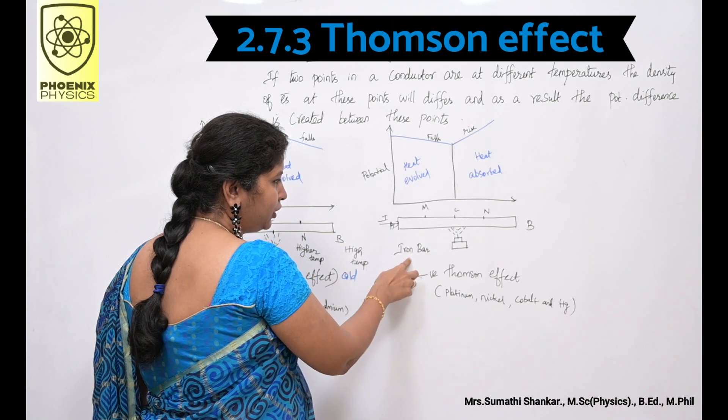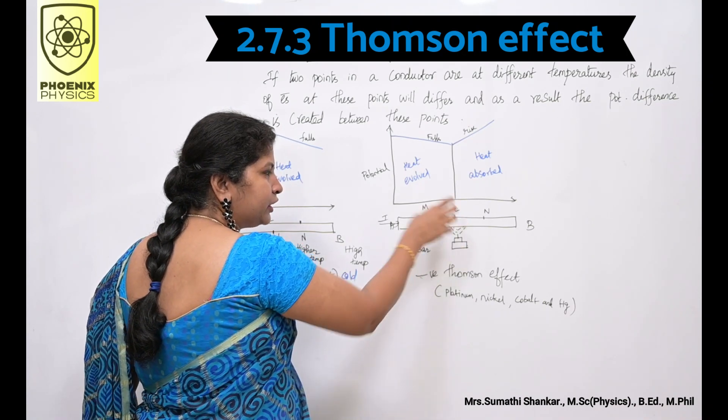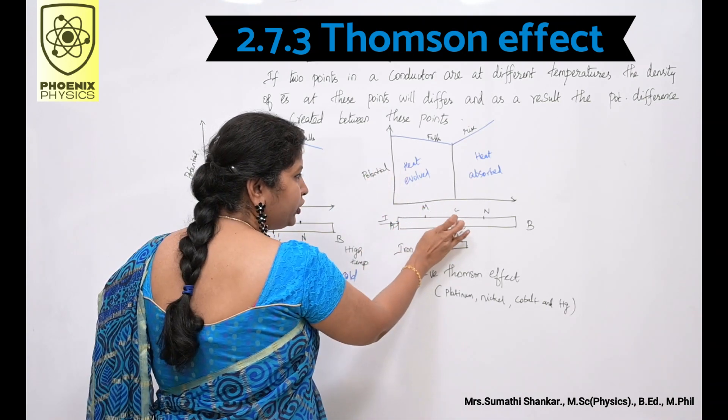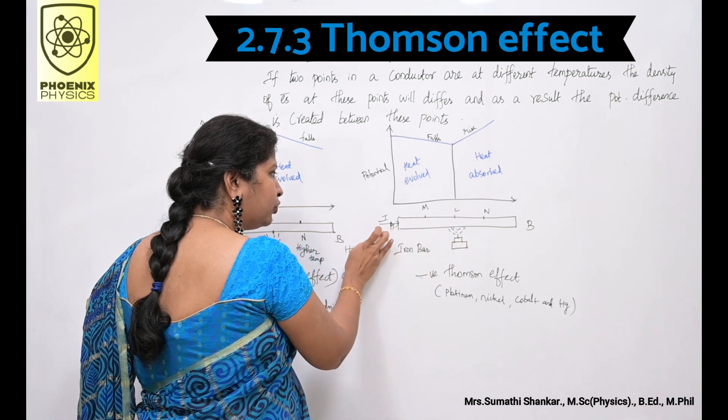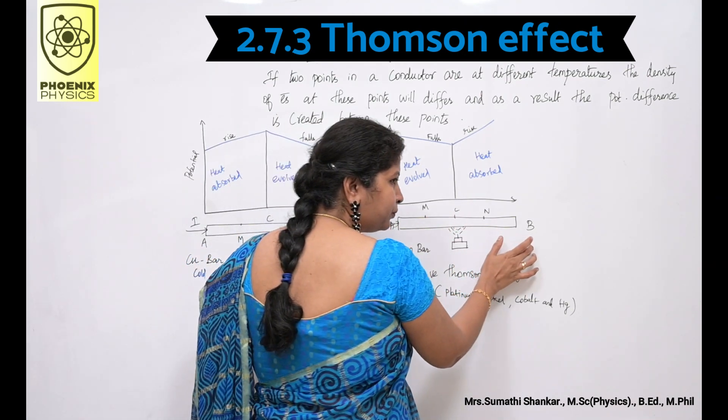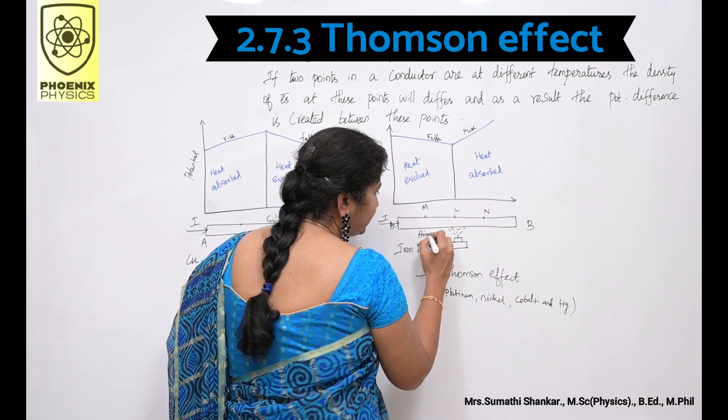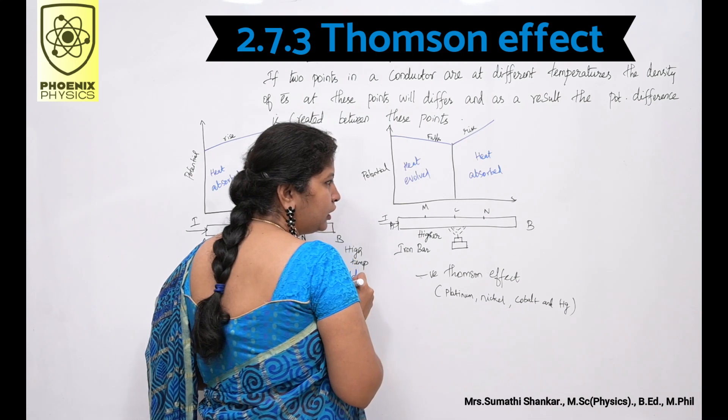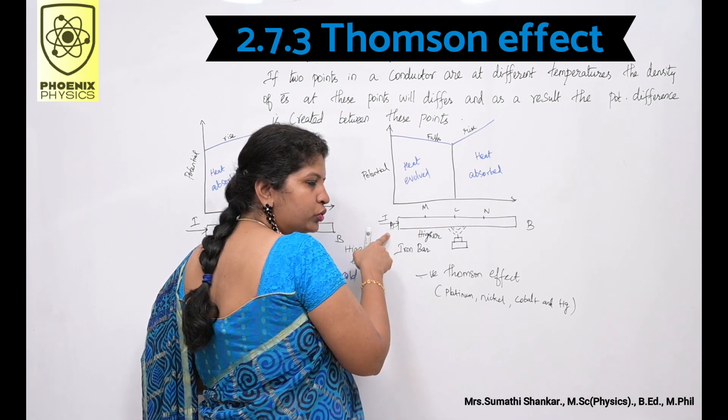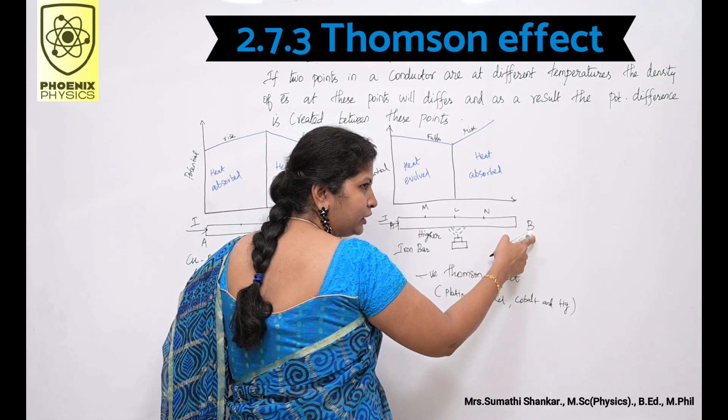But in the case of iron bar, when the heat is applied at the point C and current flows from A to B, M shows higher temperature than N and A shows higher temperature than B.